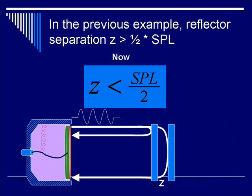As you can see by moving closer together the two reflectors to a z, which is much smaller than SPL over 2, now do you think that you can resolve the spacing of these two reflectors? Let's follow the path of the transducer signals.